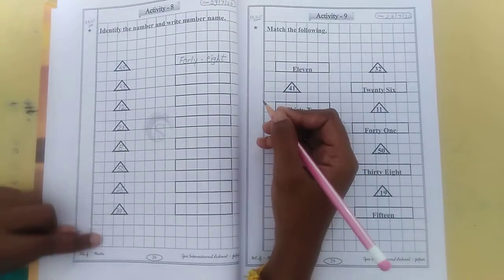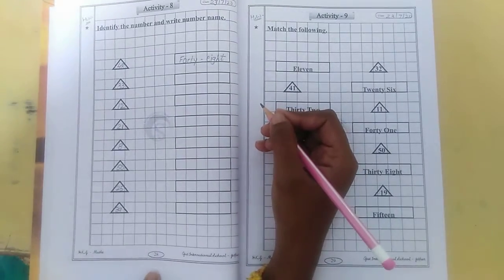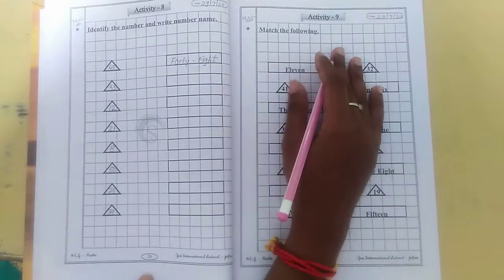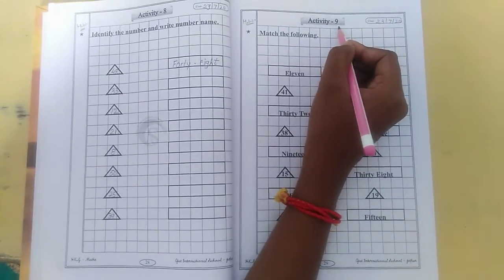So this way you have to complete full page. Page number 28. Now in the next page, activity number 9.